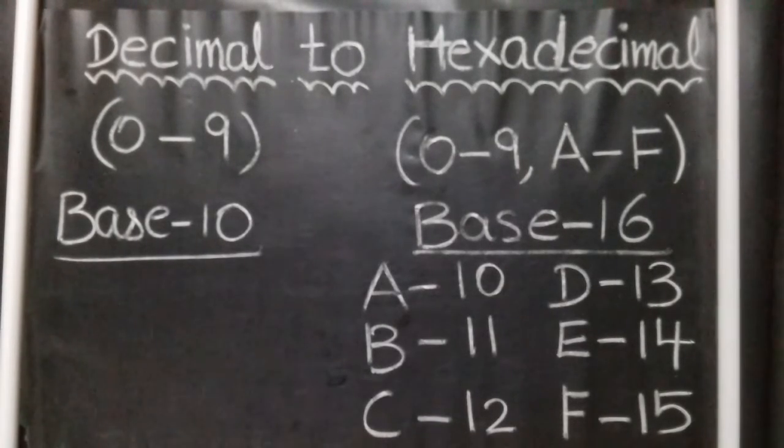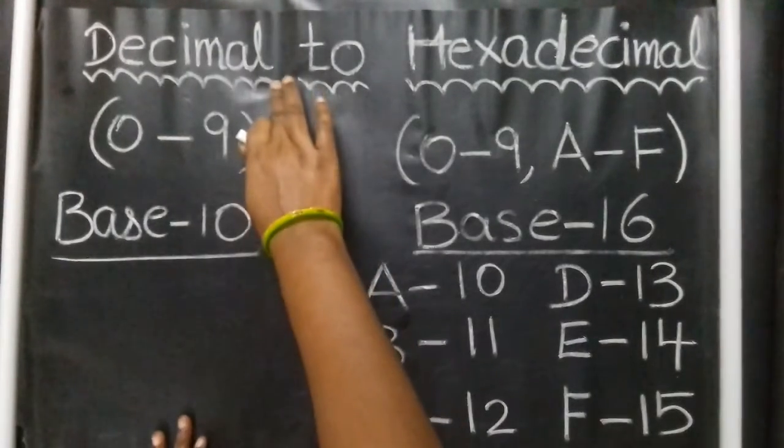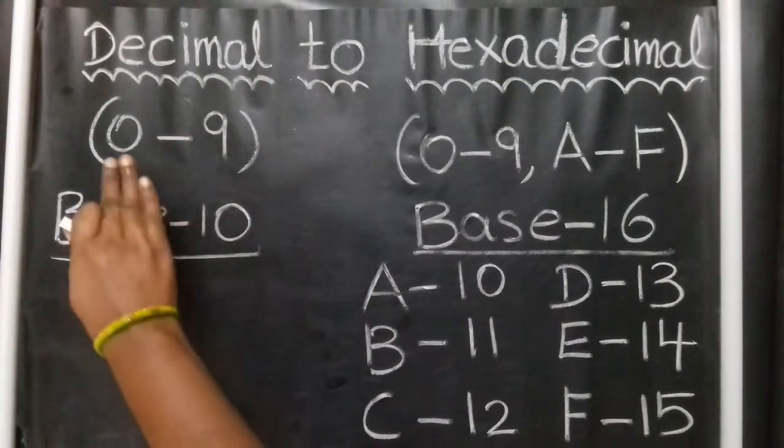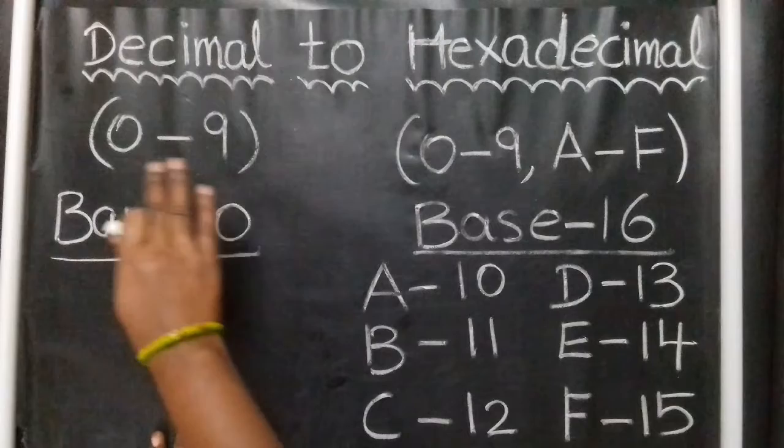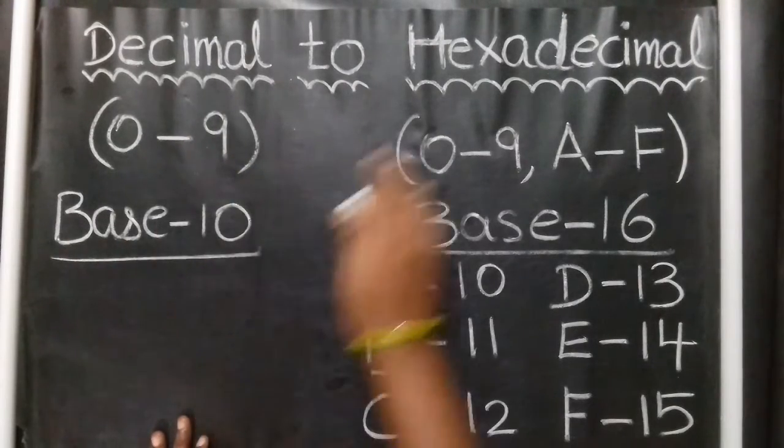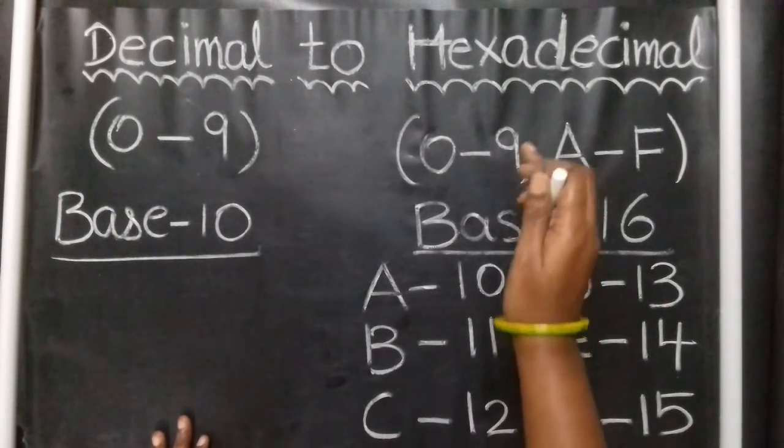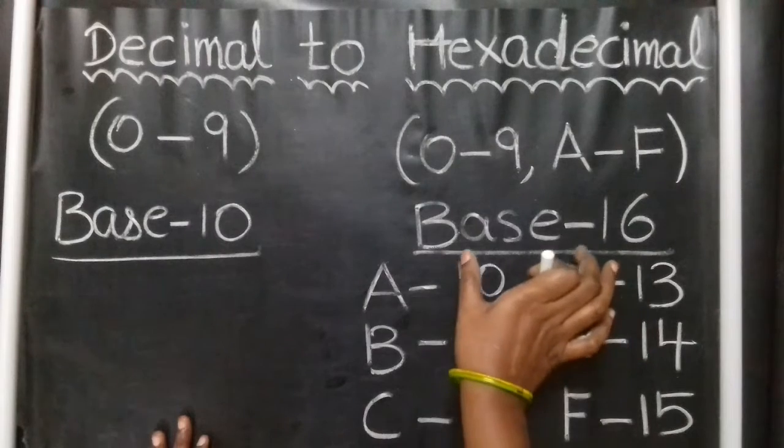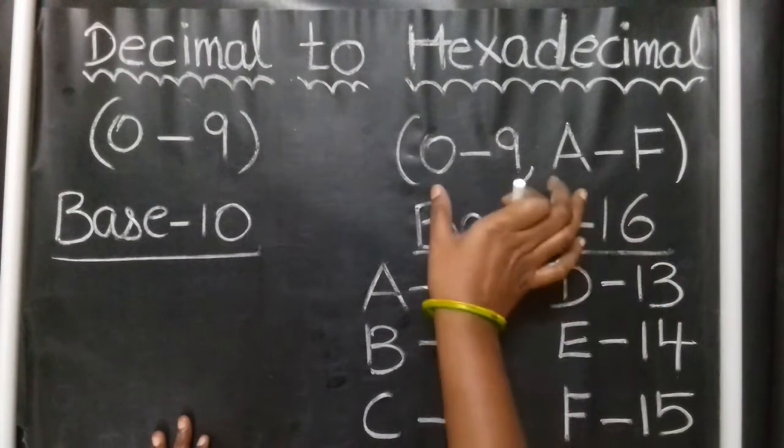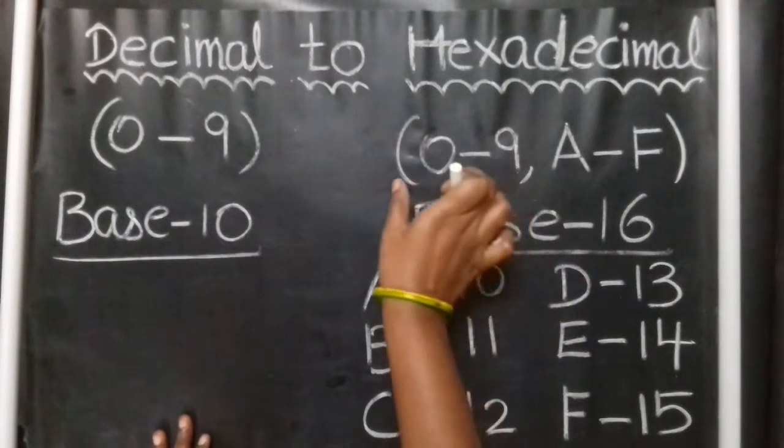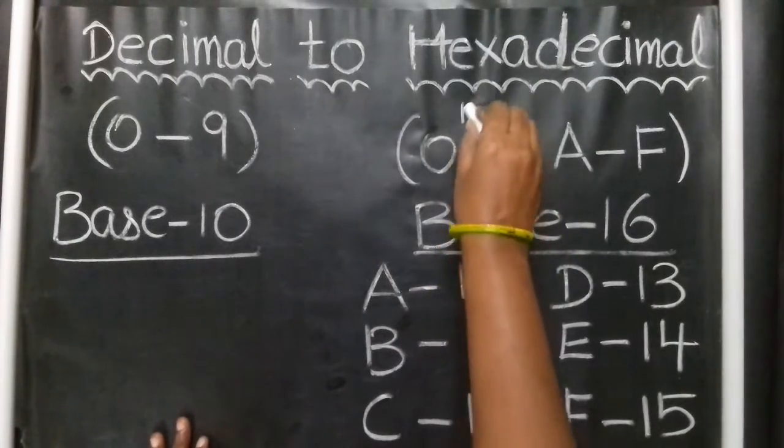Coming to conversion of Decimal Number System to Hexadecimal Number System. Decimal Number System is a base 10 system, using digits from 0 to 9, total 10 digits. Hexadecimal is base 16 system.